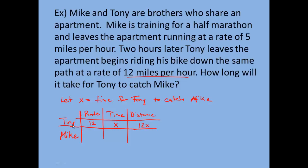Similarly, for Mike — he's training for a half marathon and leaves running at a rate of 5 miles per hour, so his rate is 5. For his time: Tony's time to catch Mike is x, but Mike left 2 hours before Tony — Tony left 2 hours later. So Mike's time is x plus 2, because he's been traveling for 2 more hours since he left earlier. His distance traveled would be 5 times (x plus 2). Make sure you get that x plus 2 in parentheses, because it's 5 times that whole thing.